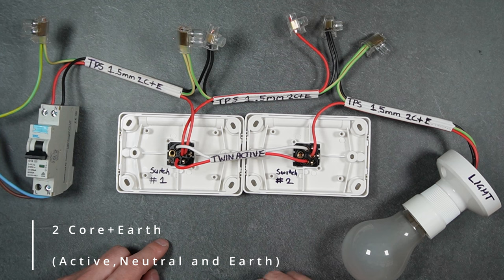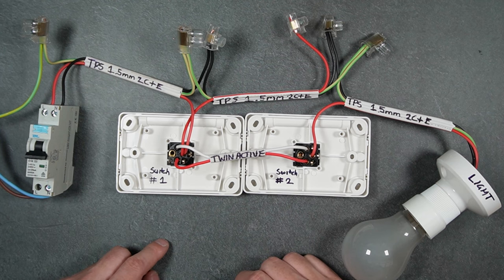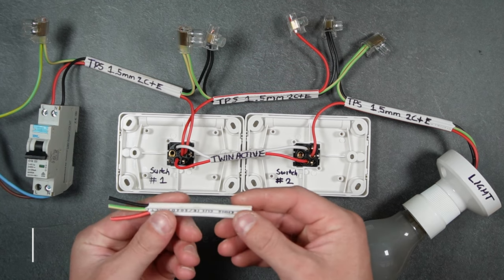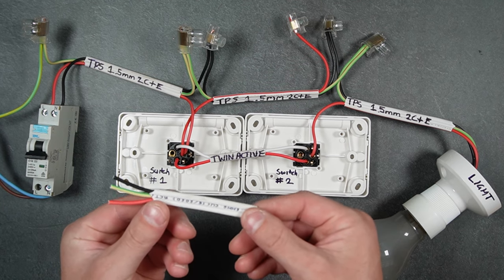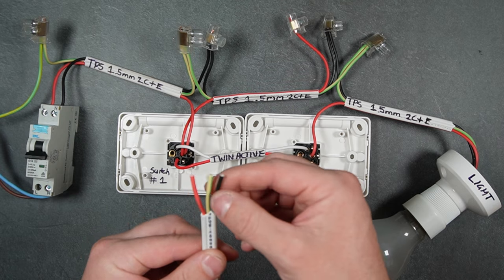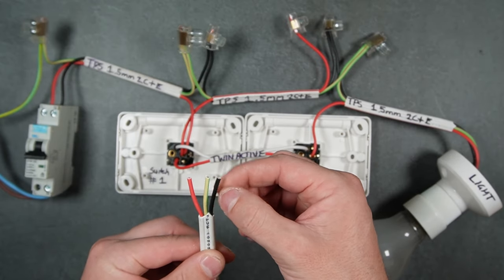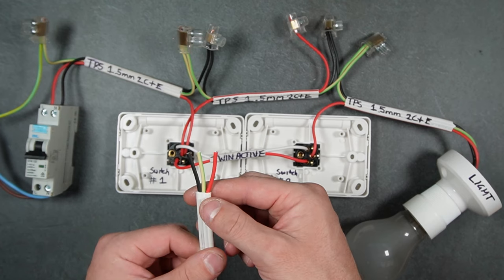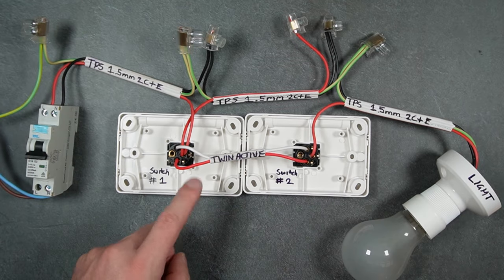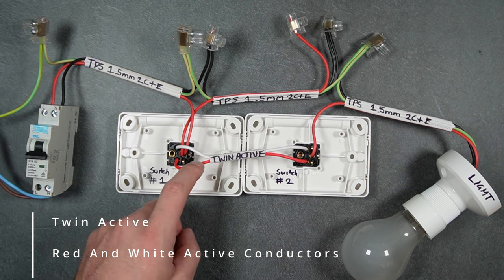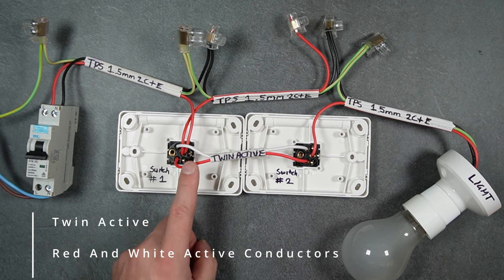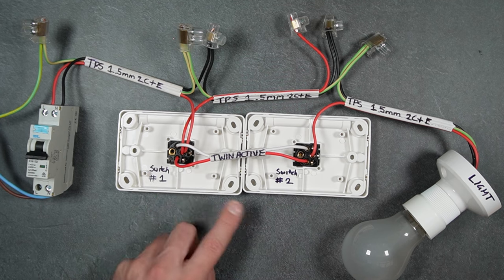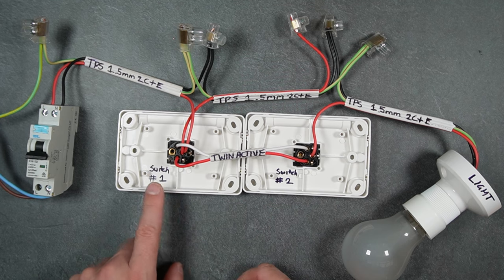which means thermoplastic sheathed cable. The inside active, neutral, and earth conductors are individually insulated. The twin active cable has two active colors - red and white - and is 1.5 millimeters, to complete the two-way circuit between switch number one